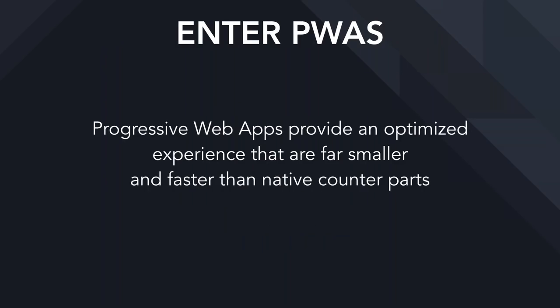This brings us to the point where progressive web apps come in to really improve the user experience on the web. They provide an optimized experience that is often smaller in code per feature and faster than the native counterparts. For example, the Twitter PWA has about 400 kilobytes worth of code and does about 90% of what the native Twitter app does, and it's often faster with a better user experience.